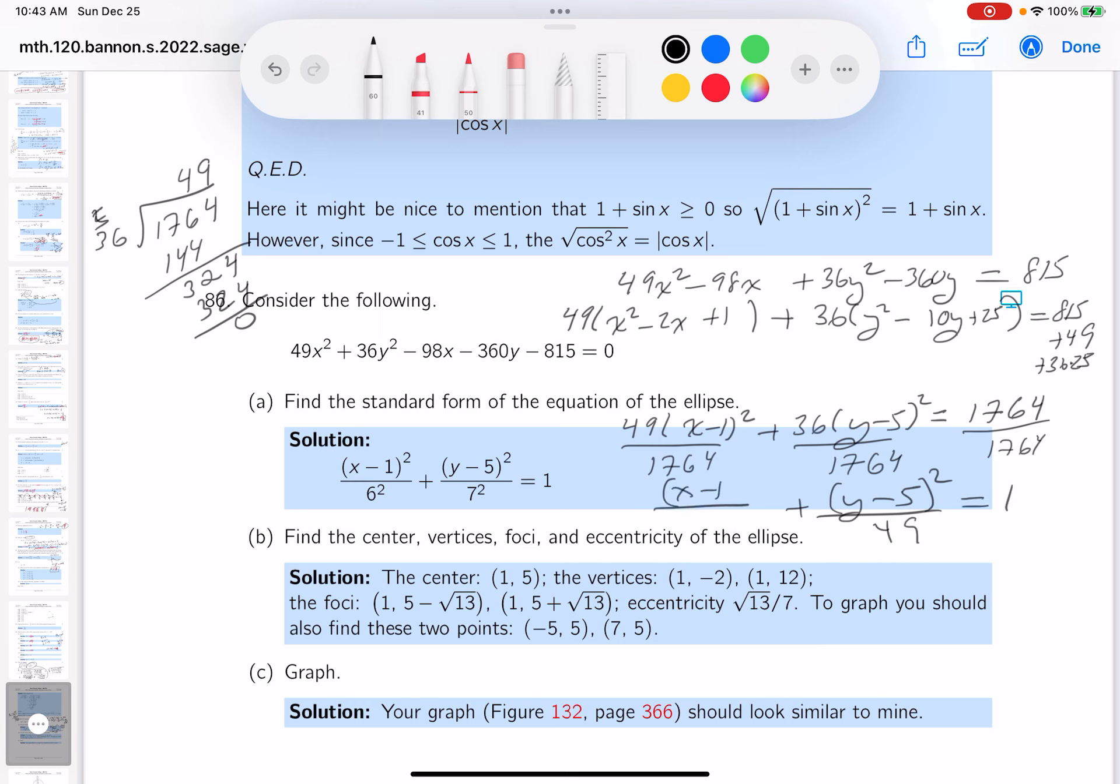Well, isn't that convenient? And when you get over here, you get x minus 1 squared. Well, 49 goes into 1764, 36 times. How do I know that? It's right over here. Let's take a look and see if we got that. I got this and I got this. The next question: center, vertices, foci. They do ask about eccentricity as well.